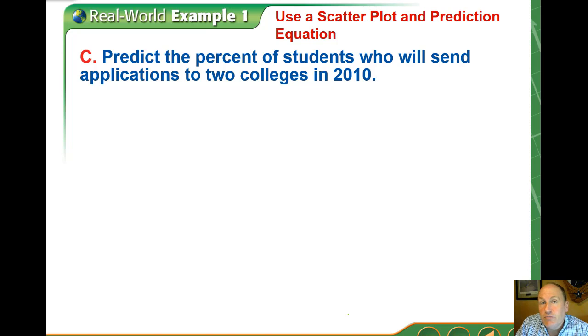The important thing here is making a prediction. If there is a relationship here, and there appears to be a fairly strong negative correlation, let's make a prediction. Given this data, what percentage of students will send applications to two colleges in 2010?